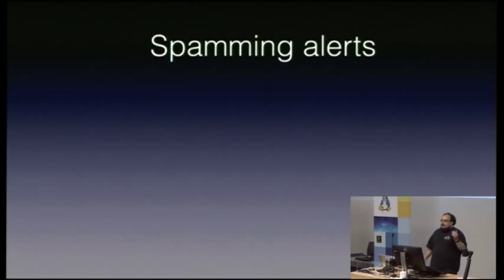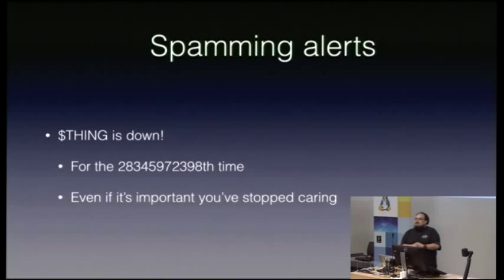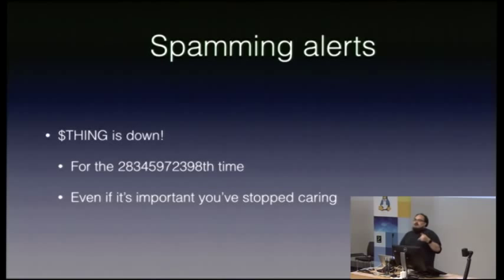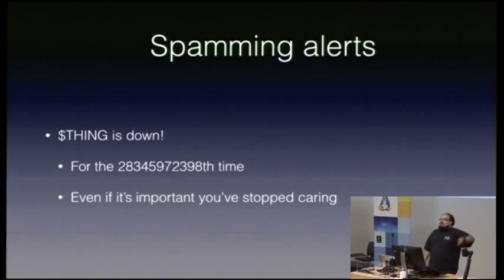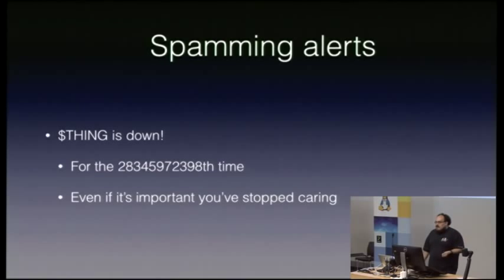Now, spamming alerts. Nearly all of us have probably seen similar alerts at various times. Something's been down for the trillionth time. Even if this matters, you've stopped caring. Realistically, everyone on your team has already started ignoring this alert. It doesn't matter how critical it is — it fires so often, especially if it doesn't actually seem to break anything. If it's a redundancy impact, or a network link in a place that doesn't actually matter, you stop caring, stop acting, and start ignoring. And when you start ignoring your alerts, you're going down a very bad hole.